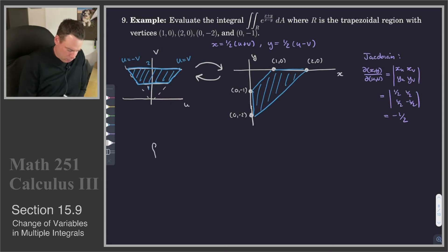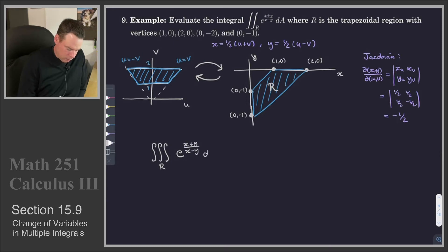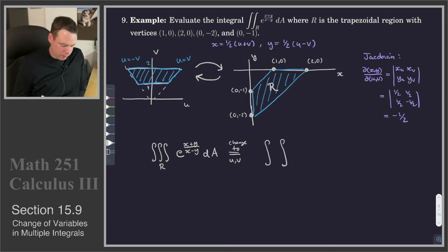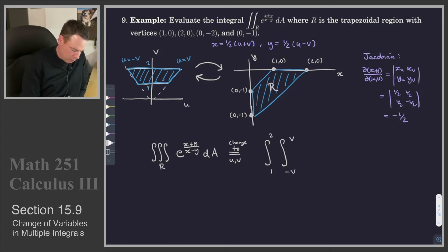Now we can go ahead and compute our integral. We want to integrate over the region R of e to the (x plus y) over (x minus y) dA. We are going to change to u and v coordinates. We've got to integrate over the correct region, given by our picture. v is going from 1 to 2, u is going from negative v to v — that's our description of the region.